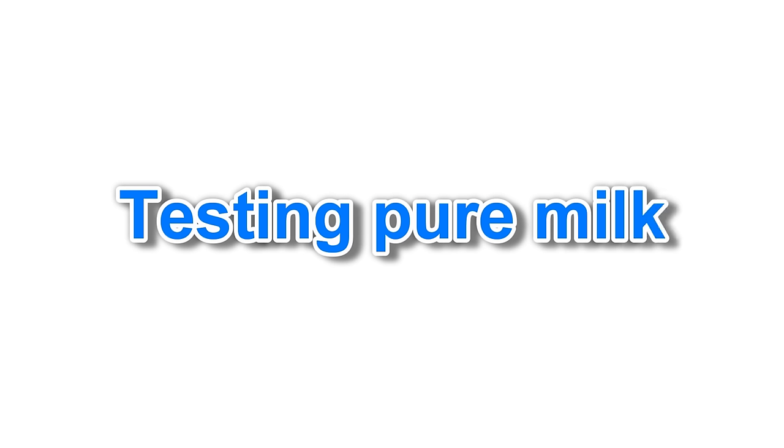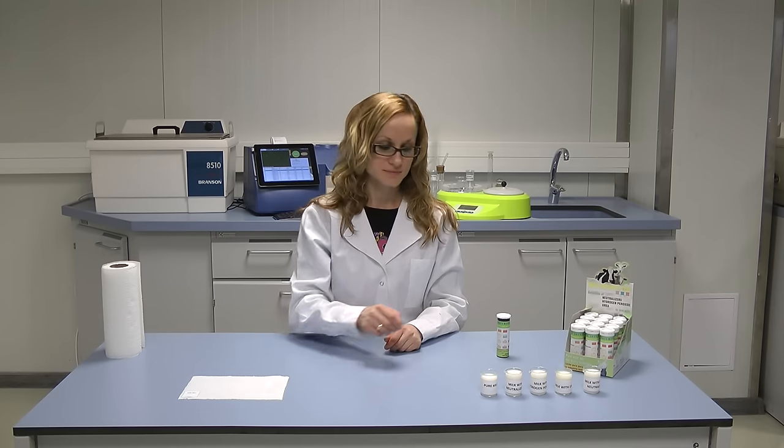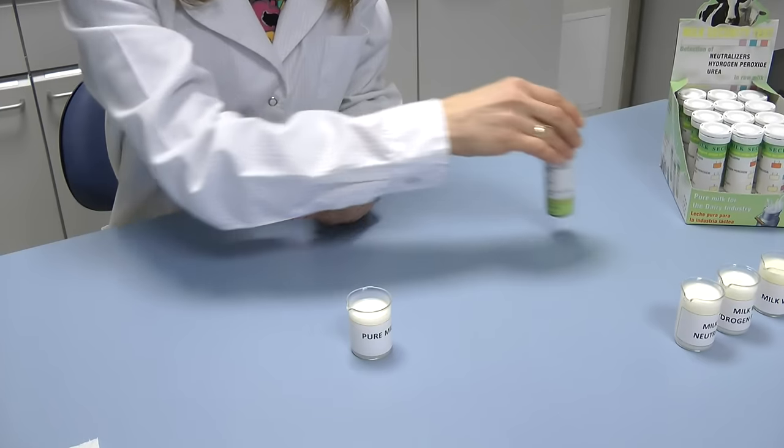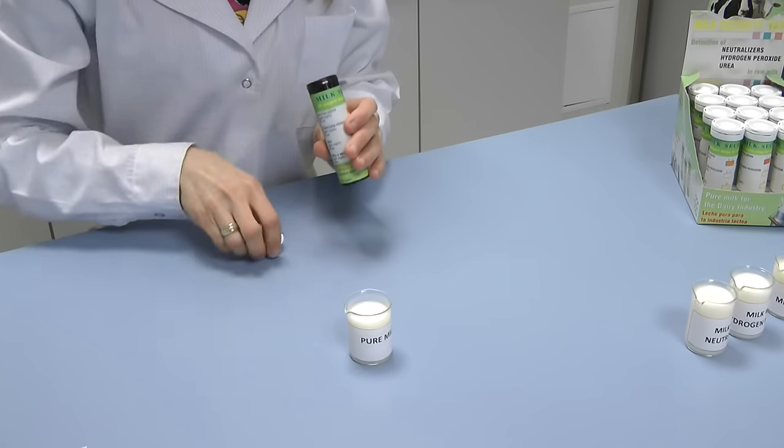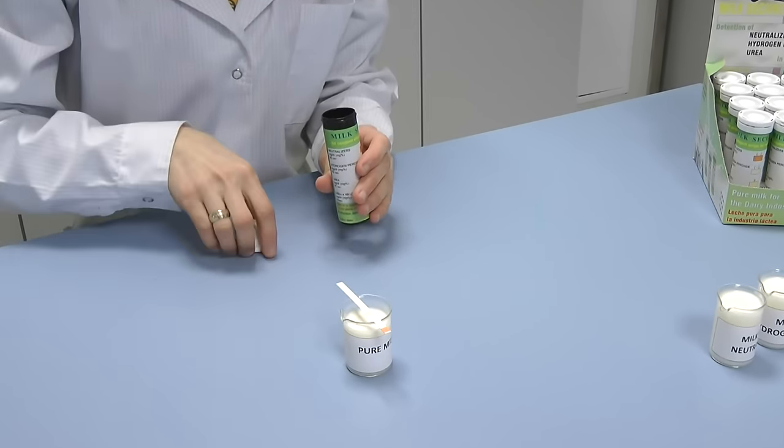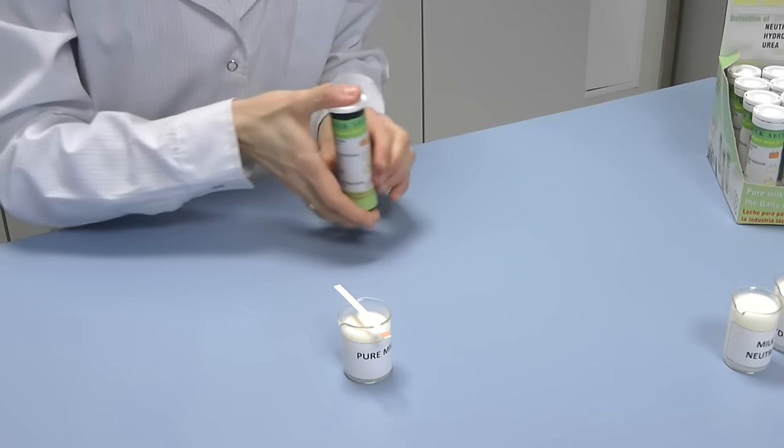How to use? First, test pure milk without adulterations. To do this, open the cap of the test tube. Take one test strip for testing, then immediately close the tube.